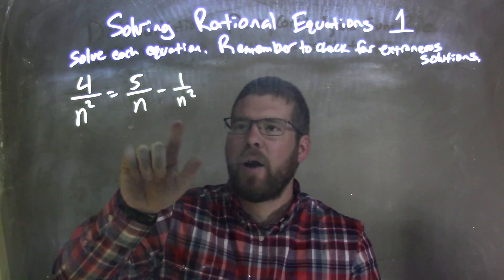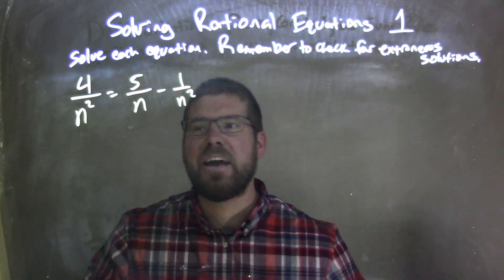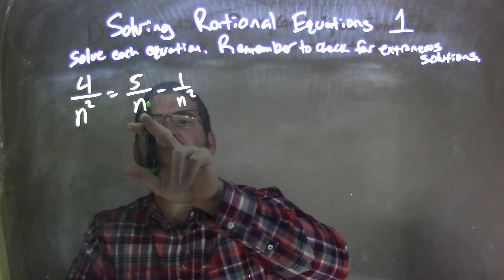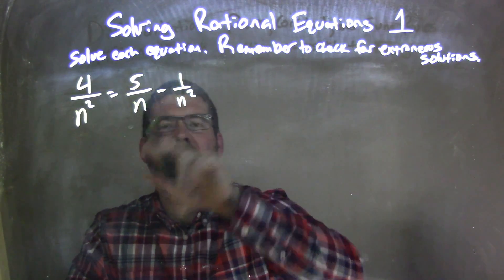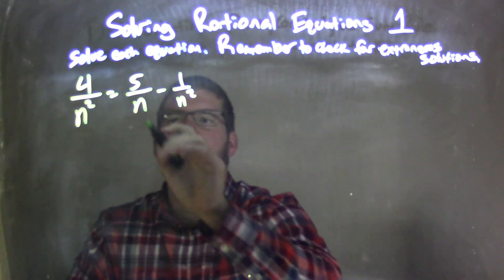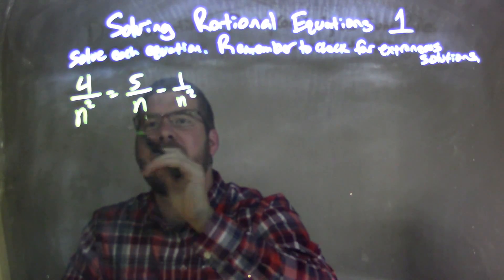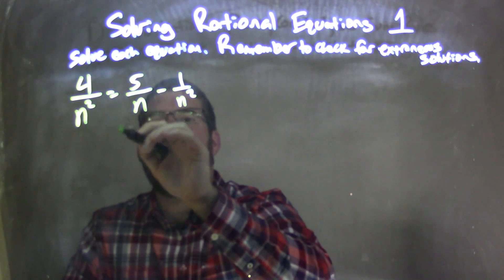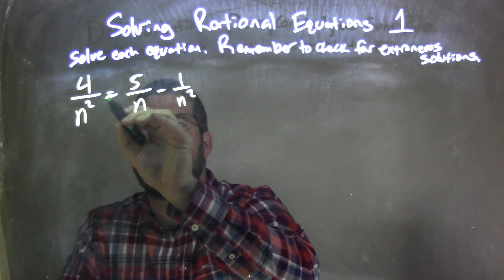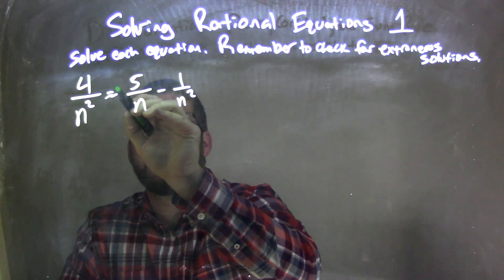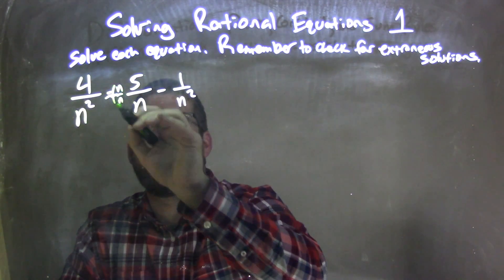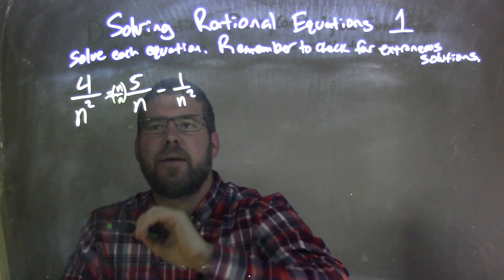Right now, I want to combine these two fractions. I can't at the moment because this has a base of n and that's a base of n squared. So what I'm going to do is multiply this 5 over n by n over n. I'll multiply this by n over n — we'll fit it in right there.